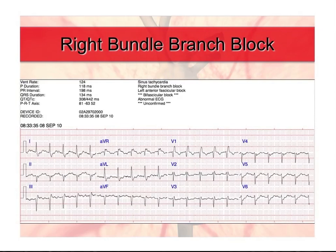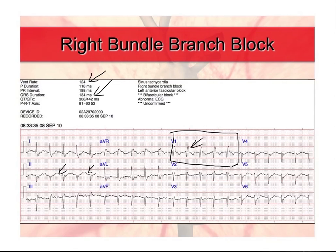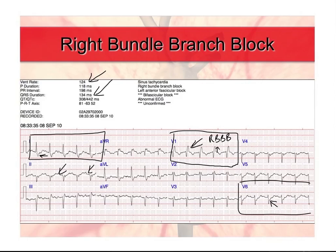Let's look at another example. Again it's wide — QRS duration 134 milliseconds. We see P waves with every QRS complex, confirming a supraventricular rhythm. Looking at V1, the last wave is certainly upright, indicative of a right bundle branch block. Looking at lead 1 and V6, we have a terminal S wave in both leads. That is also indicative of a right bundle branch block.